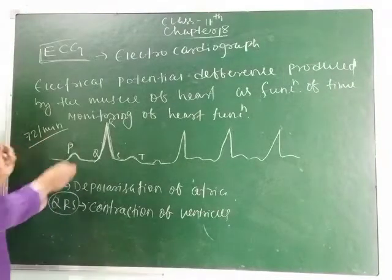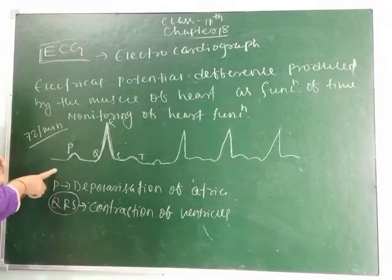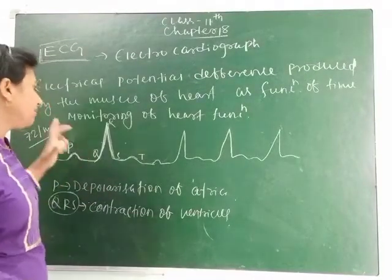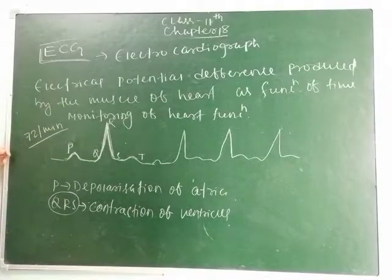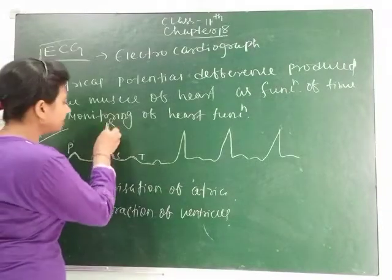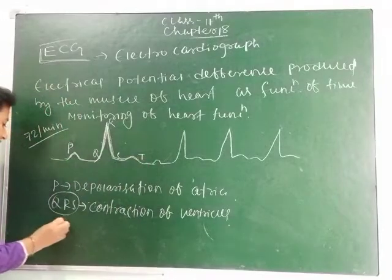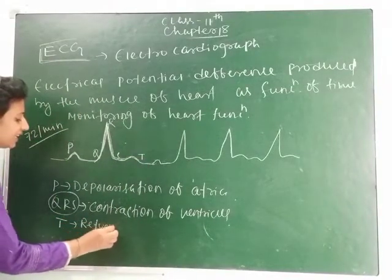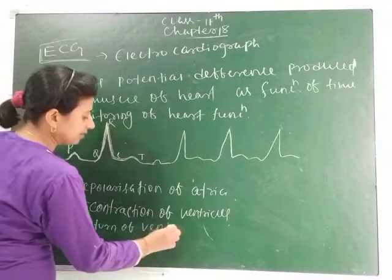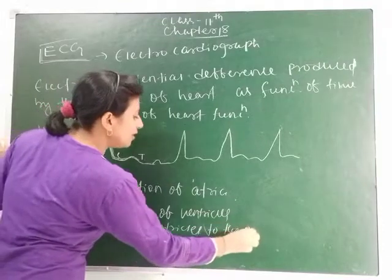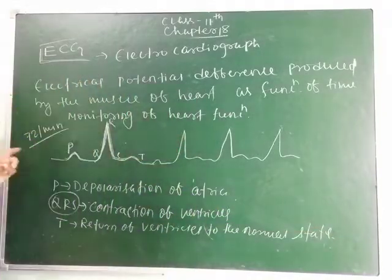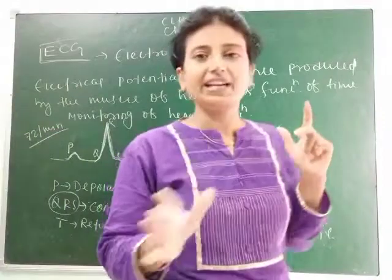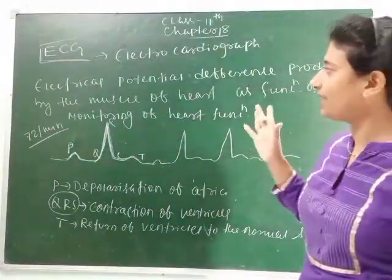So here, P represents the depolarization of atria. This is the most important point — just remember P and QRS. This is a question worth 3 marks in the paper.